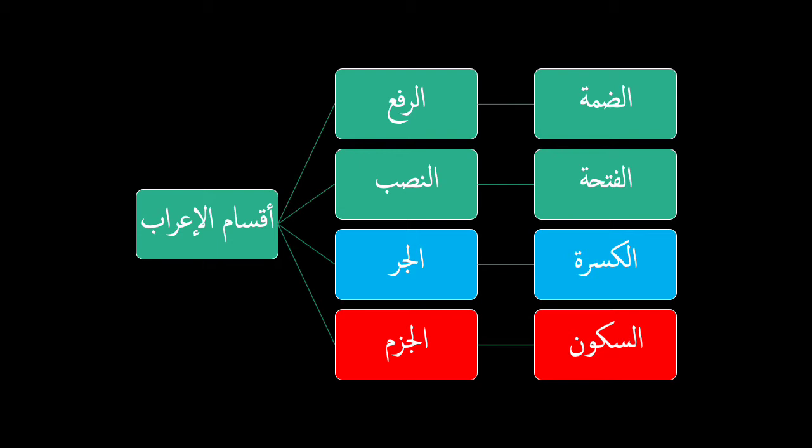The fi'il al-mudari' can be mansoob or marfoo'. The ism al-mu'rab can be marfoo' and can be mansoob. As for the jarr (genitive case), this is unique to the asma' (nouns). As for the fi'il, it is unique in that it can be majzoom. So the ism can never be majzoom, and the fi'il can never be majroor.